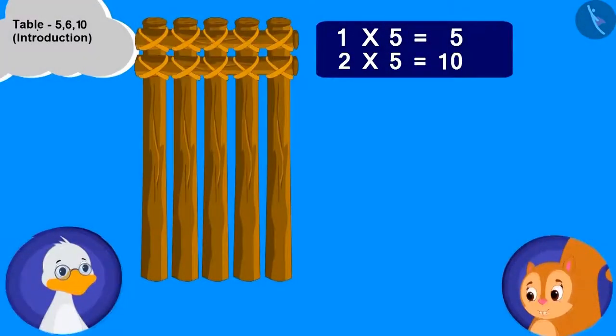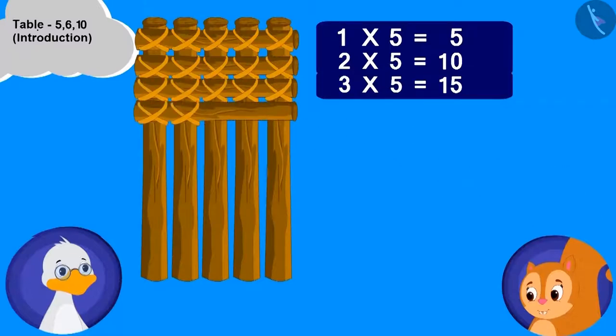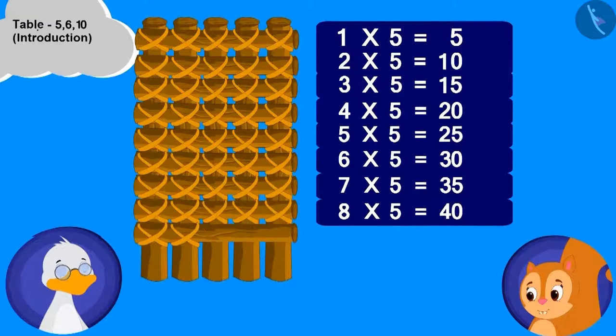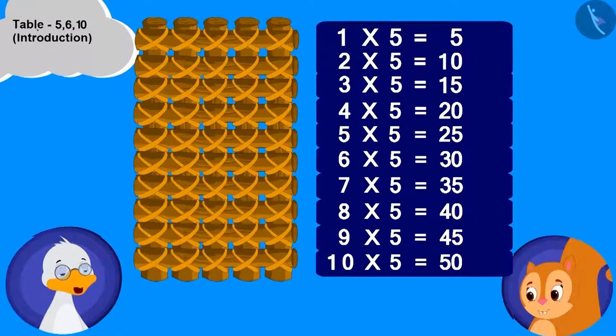This is very easy. Just keep adding the horizontal woods and keep counting the total joints. Your boat and table both will keep building.